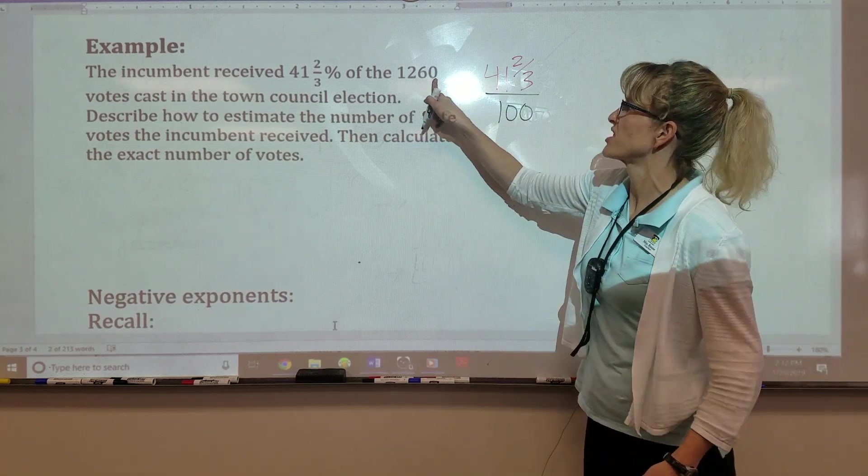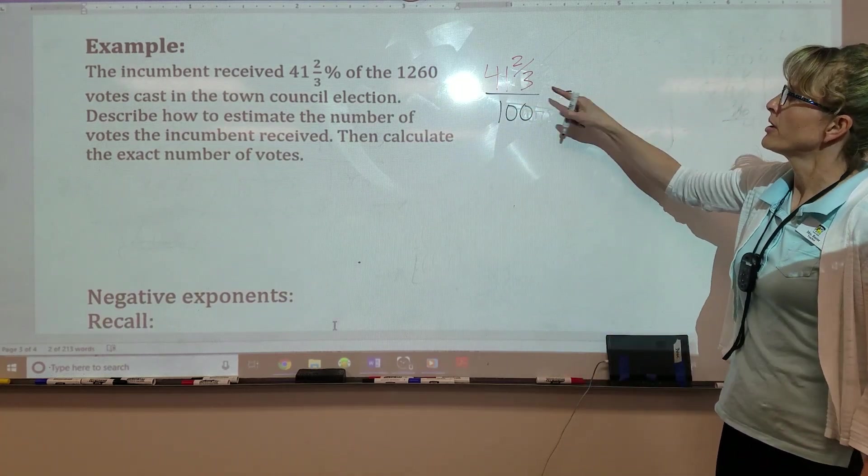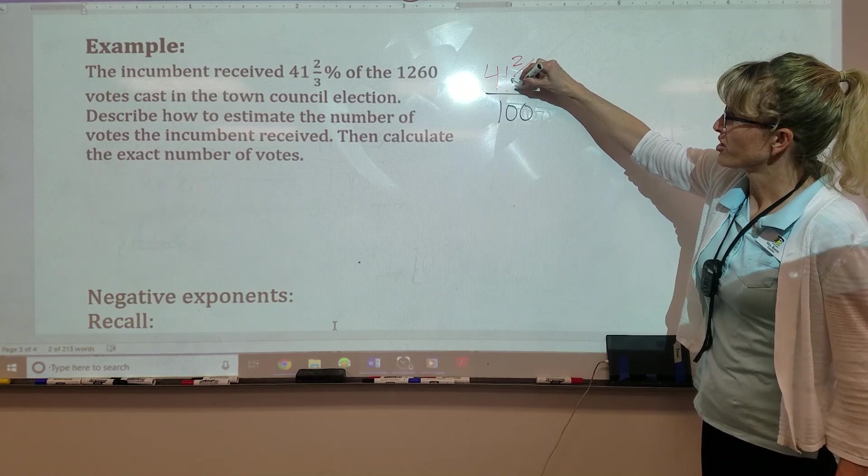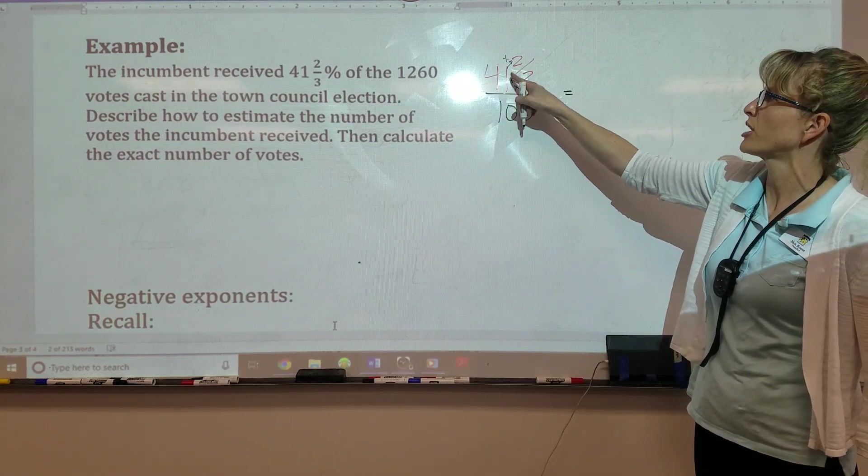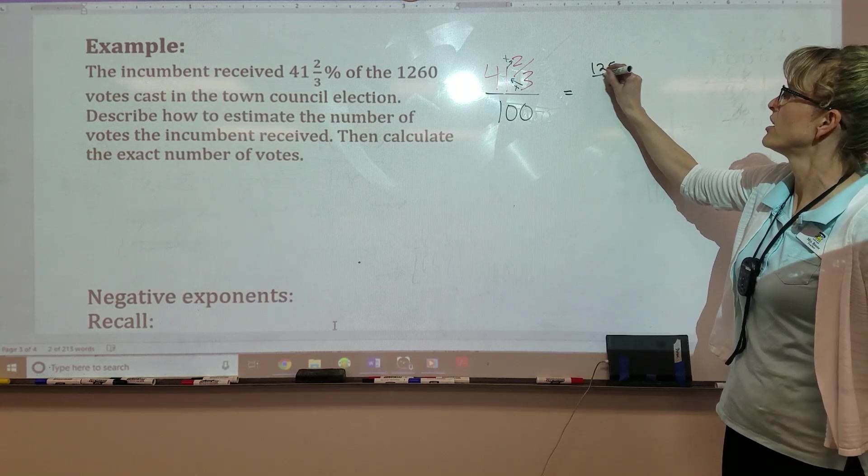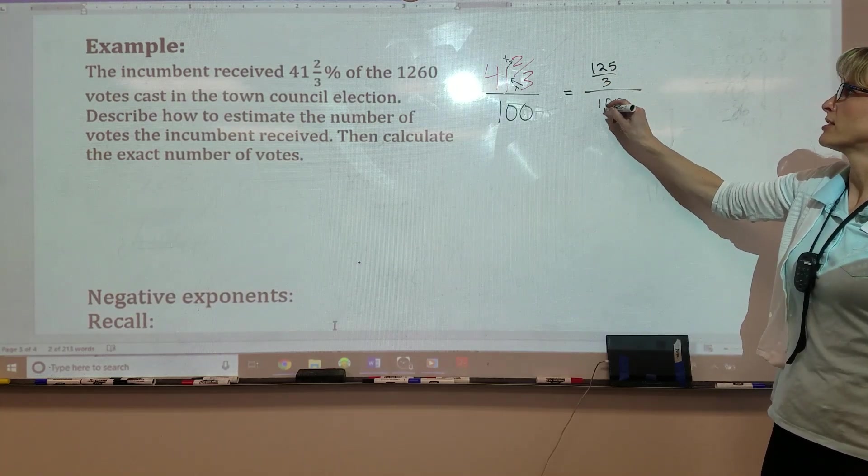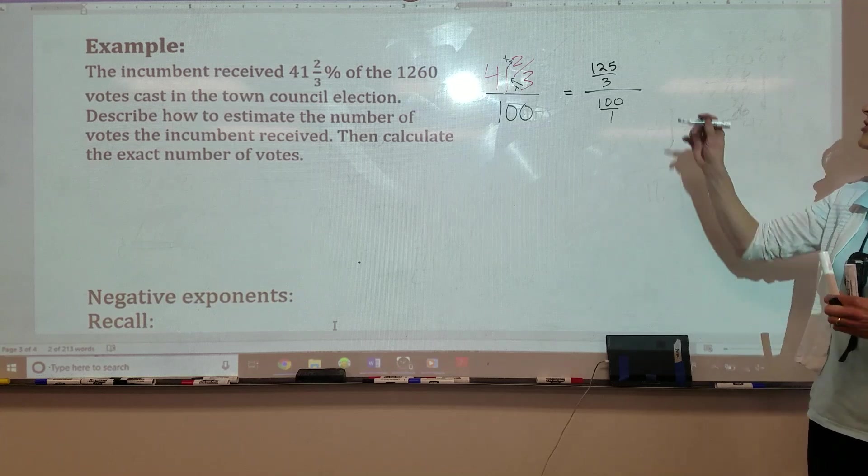Well, before we times it by 1260, let's clean this up a little bit. Let's do that trick where we multiply and then add. So 3 times 41 is 123 plus 2 is 125. Keep the denominator the same over 100. Make it a fraction. Copy, dot, flip.